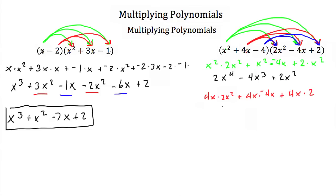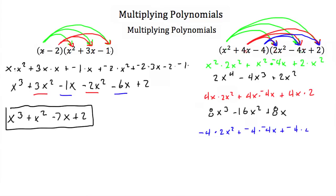Then lastly, we multiply negative 4 by everything: negative 4 times 2x squared is negative 8x squared. Negative 4 times negative 4x is positive 16x. And negative 4 times 2 is negative 8. Now we take all three groups and add them together.